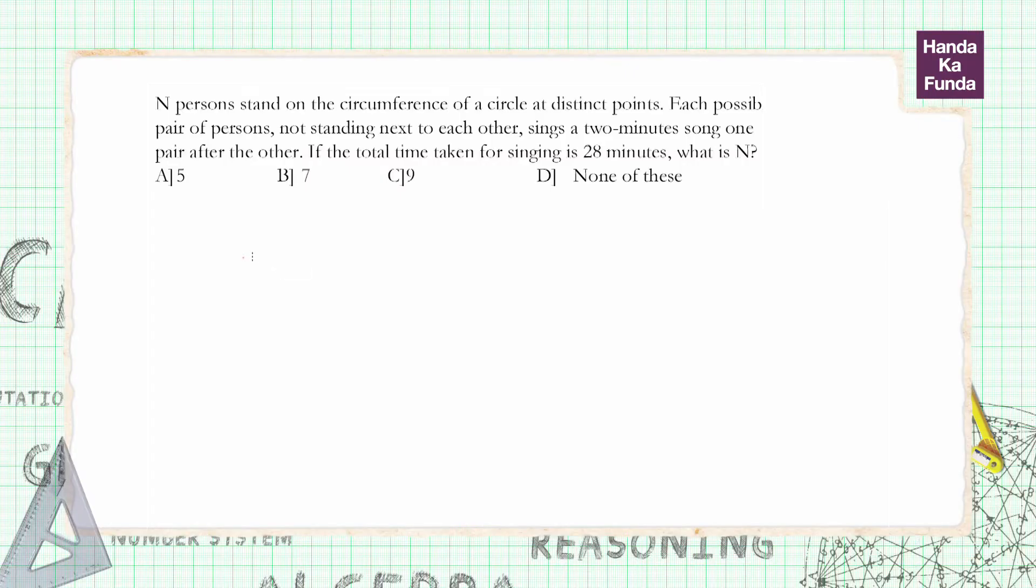Hi, in this question we are given that there are N persons standing in a circle on the circumference at distinct points. So let's say this is Mr. 1, Mr. 2, Mr. 3, and so on. I don't know how many people are there, essentially that is what I am asked to find out. So these are the N people standing around in a circle.